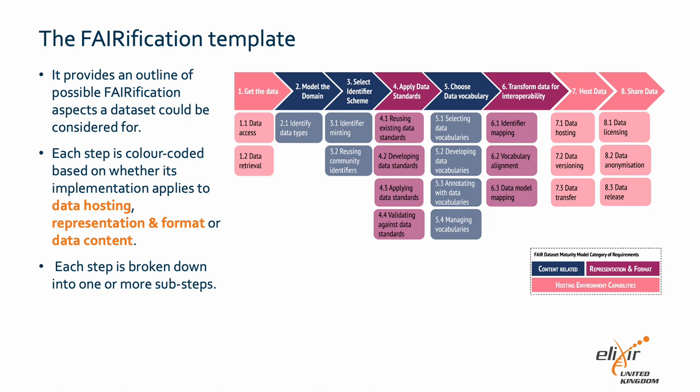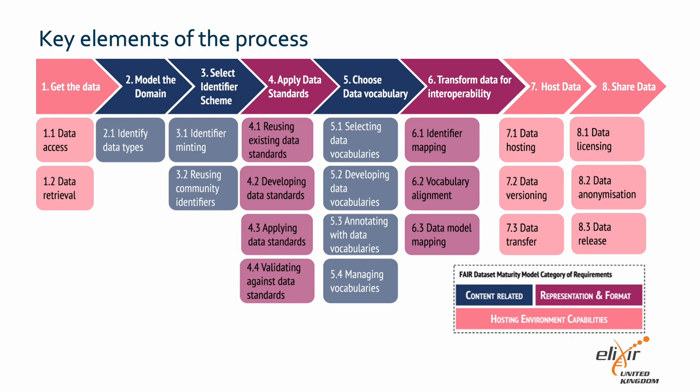I will provide a detailed explanation of how each step is broken down into one or more sub steps. Step one of the process is to acquire the data. This step involves gaining access to the underlying dataset through either a restricted or an open access API, and documenting information on querying the data via the API. Step two involves modeling the domain. In this stage, the data types within the dataset are identified.